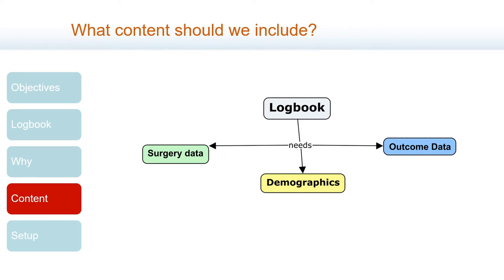Deciding what content you want to include is not an easy task. Collect too little and you will not be able to get the information you want from it. Collect too much and you will find yourself with empty fields because it takes too much time to complete the form. Basically, we can divide this content in three parts: surgery data, demographics, and outcome data.